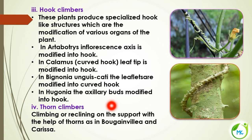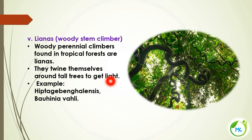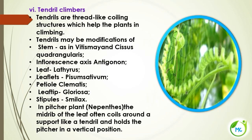The next type is thorn climbers. They use thorns for climbing support, as in Bougainvillea and Carissa. The next kind of climber is a woody stem climber called liana. These are found in tropical forests and twine themselves around tall trees to get sunlight.